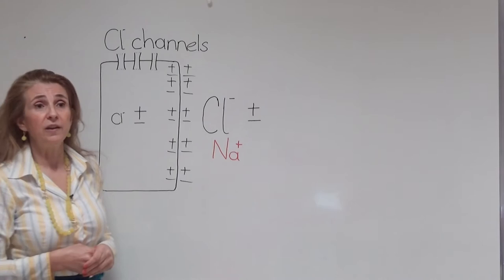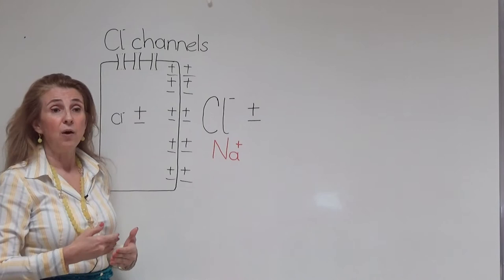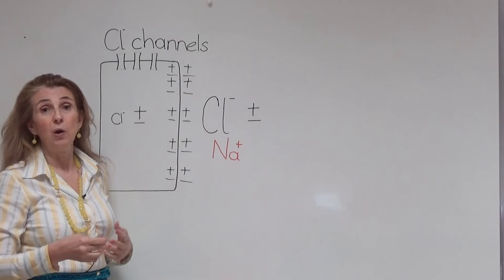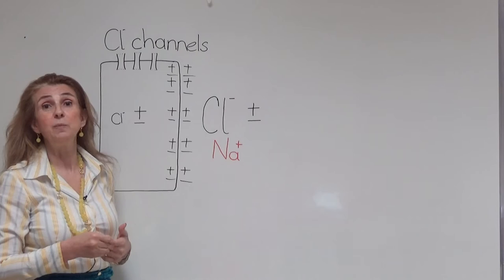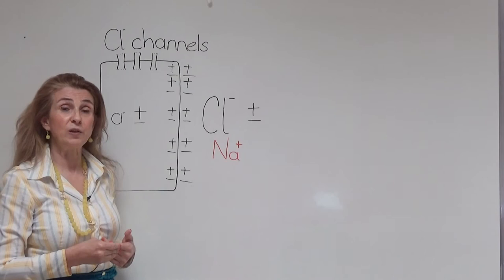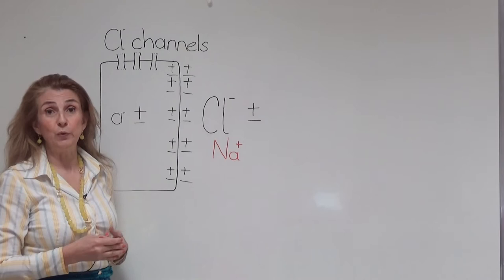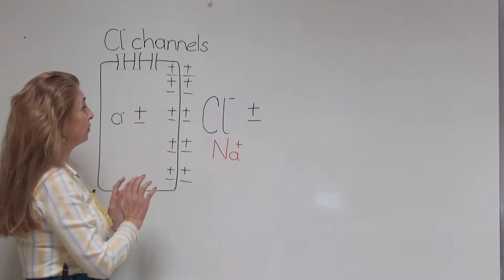We know that for ions to be able to pass through the cell membrane, or in other words for an ion current to happen, two conditions must be provided. One is that there must be an ion channel for that ion. Two, there must be a driving force pushing the ion to pass through these channels by passive diffusion. This force can be of two types. One is the chemical force, which is produced by the concentration difference of an ion.